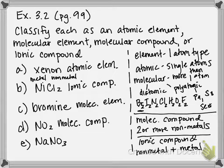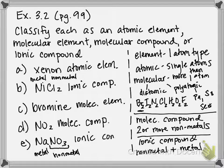And then finally, sodium nitrate, NaNO3. NO3 we will talk about later in the chapter. This is an example of what's called a polyatomic ion. But we can tell just based on our knowledge right now, we have a metal, sodium. And nitrogen and oxygen are non-metals. So when we have a metal and a non-metal paired together, that means that this is an ionic compound. And there you have it. That's how to classify each one of these as either atomic or molecular elements, or molecular or ionic compounds.